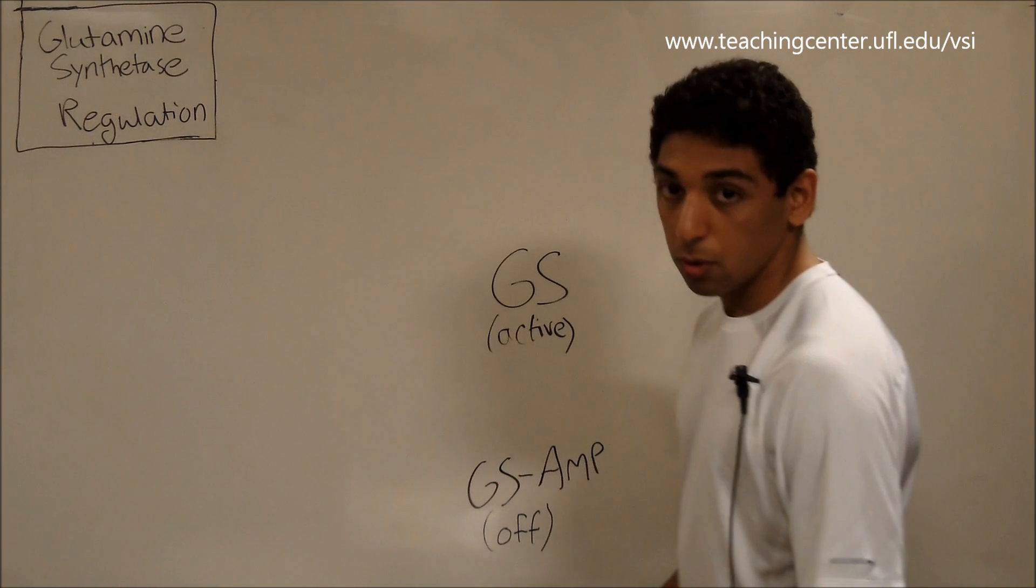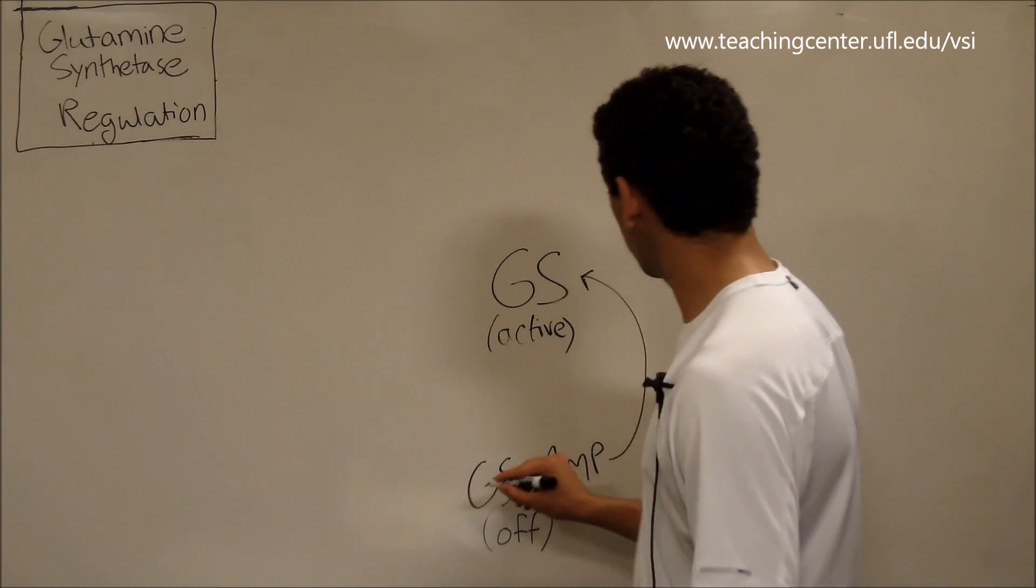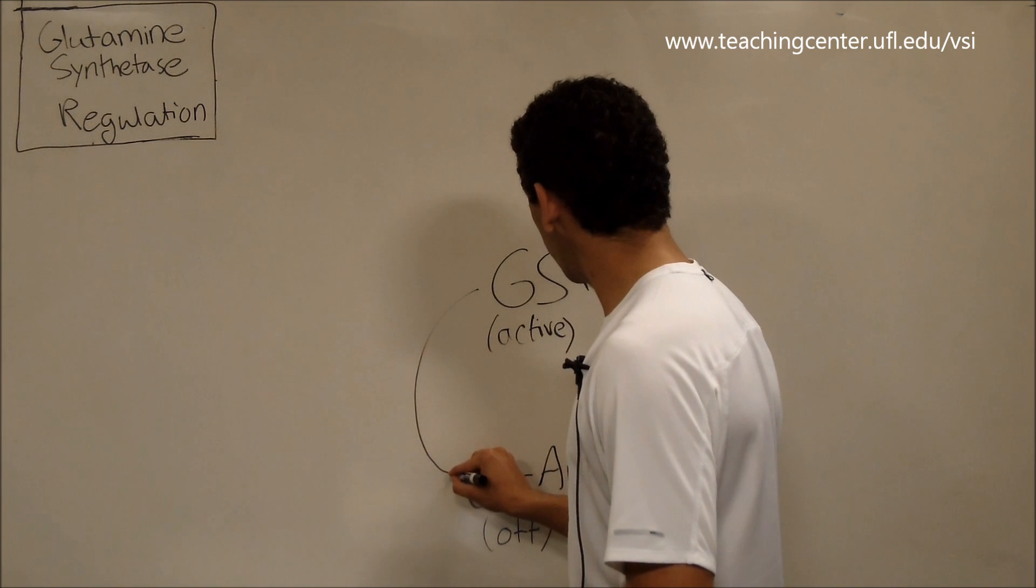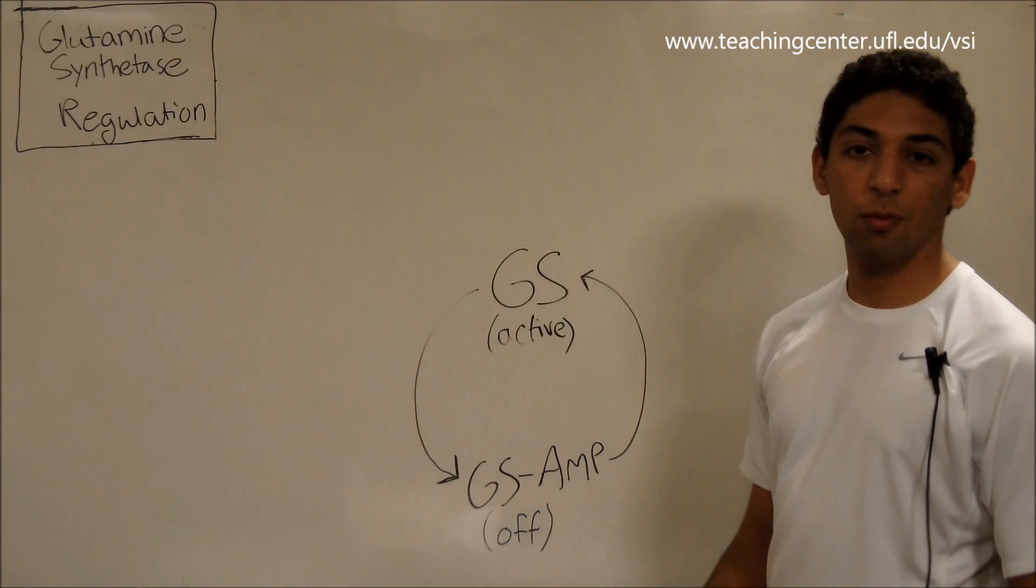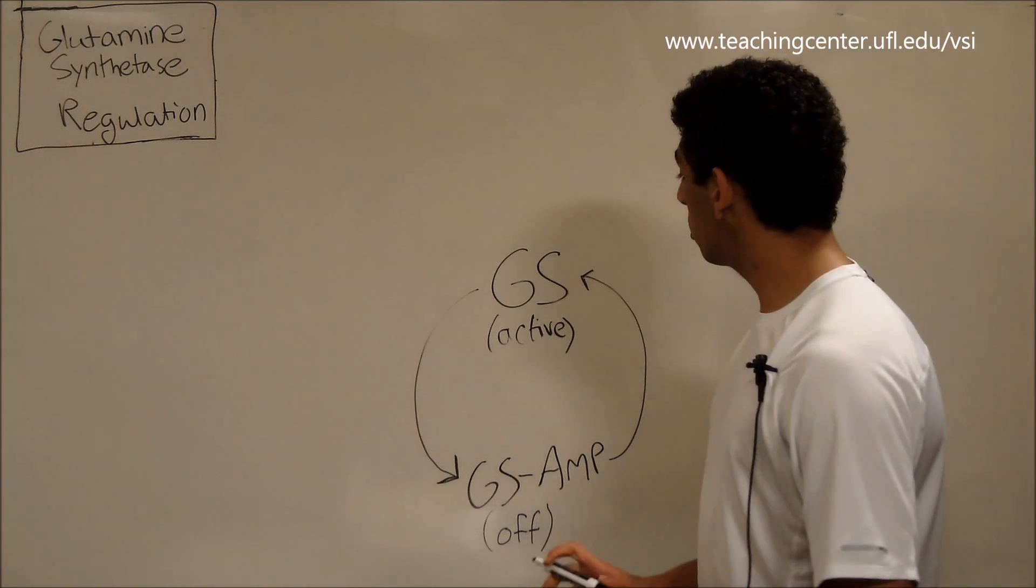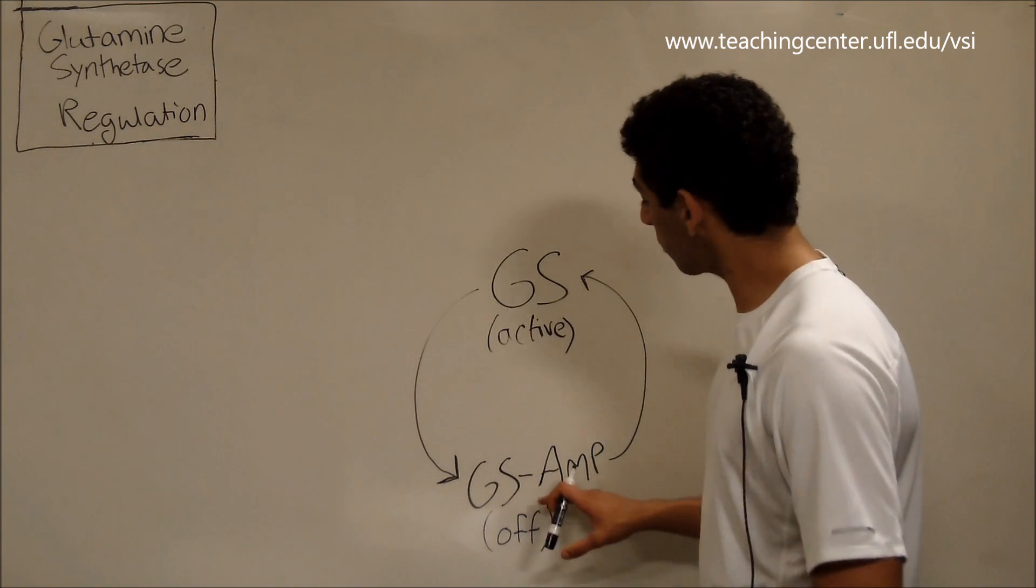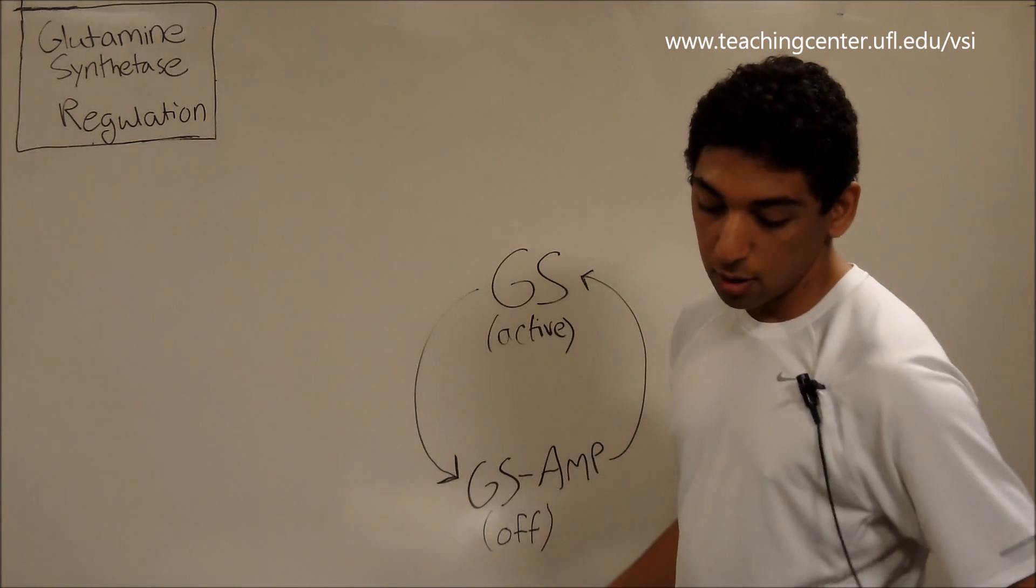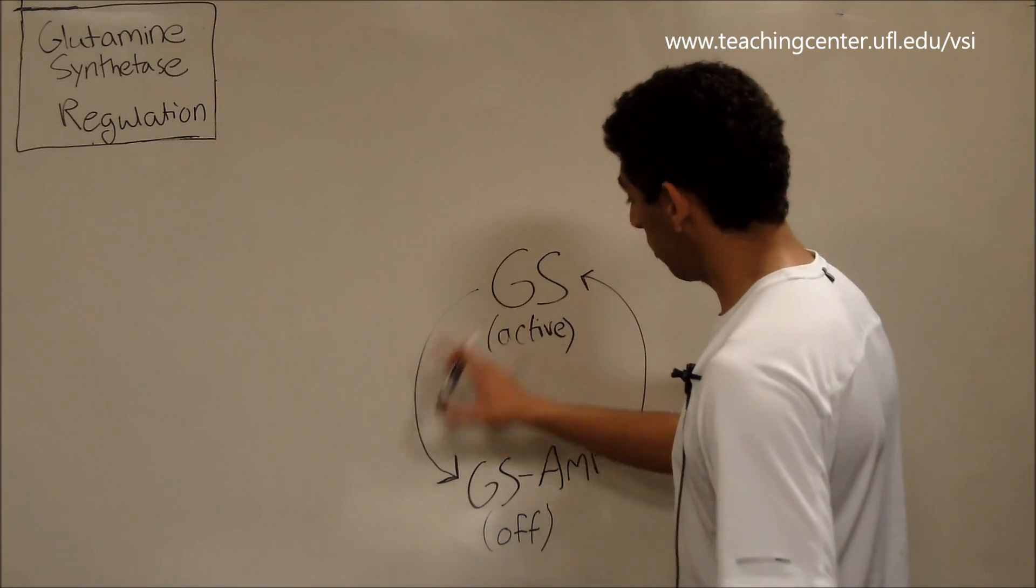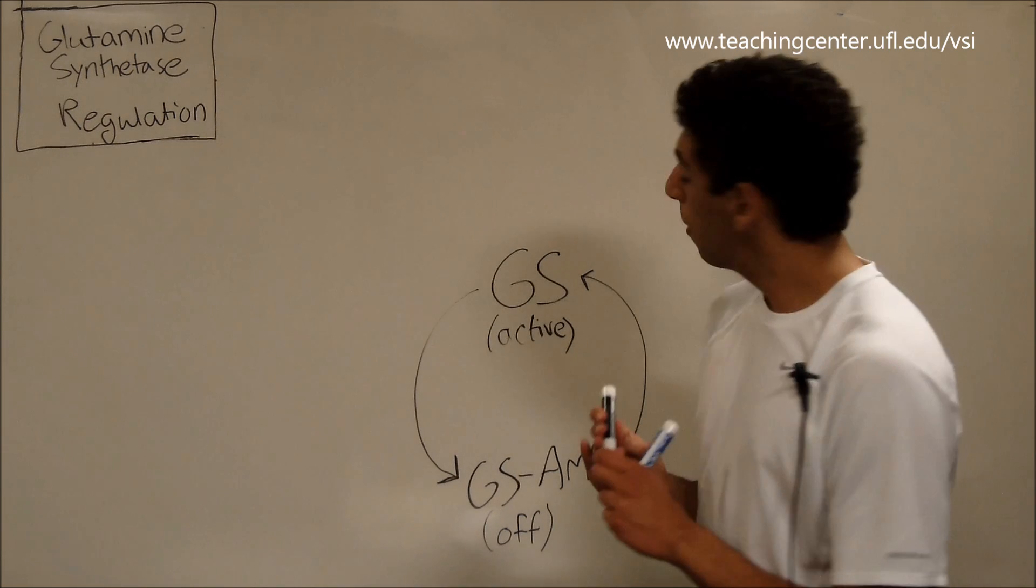And so, of course, we have to convert between these two forms because at some points we're going to want it to be on, and at some points we're going to want it to be off. Your notes have this in two separate colors, but I don't really like the way they do it. So I'm going to do it a little bit differently, and hopefully it makes a little more sense. So you've got this glutamate synthetase that is off, and you want it to be on, and you have the on one, and you want it to be off.